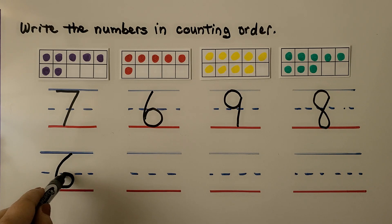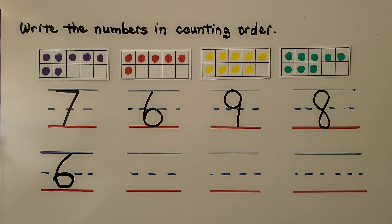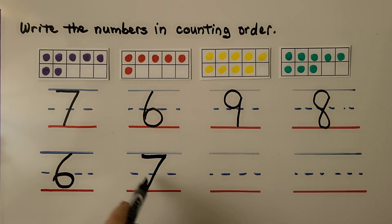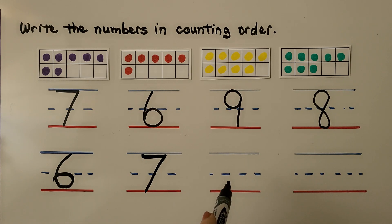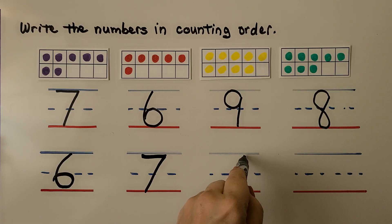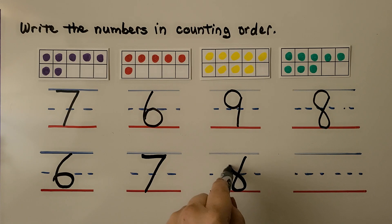Do you know what number comes after 6? If you said 7, you're right — that's 1 more than 6. So we have 6, 7. Do you know what goes next? If you said 8, you're right. We have 6, 7, 8.